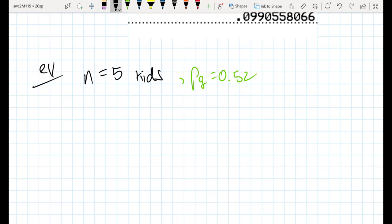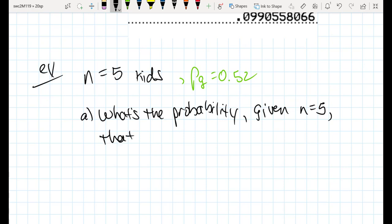And we'll stick with this probability of having a girl being 0.52. And what we want to know is, what's the probability that from those five kids, what's the probability given that they're going to have exactly five kids, that out of those five kids they will have exactly three girls?